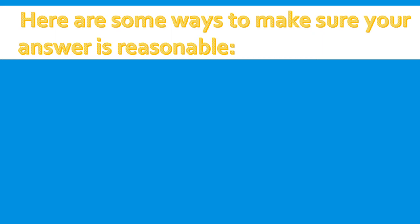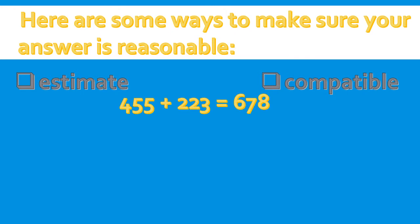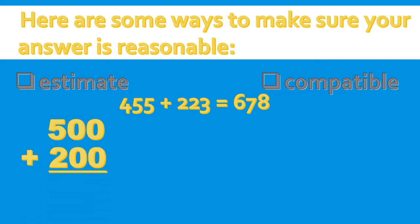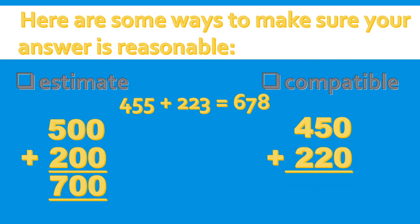Here are some ways to make sure your answer is reasonable. You can estimate or use compatible numbers. When we estimate 455, we get 500. Can you give the estimated number for 223? If you said 200, you are correct. 500 plus 200 gives us the estimated sum of 700. Now, we can use compatible numbers, and the compatible numbers should be easy to add mentally. We're going to use the numbers 450 plus 220, which will give us the sum of 670. The compatible numbers give 670, which is closer to the real value of 678.